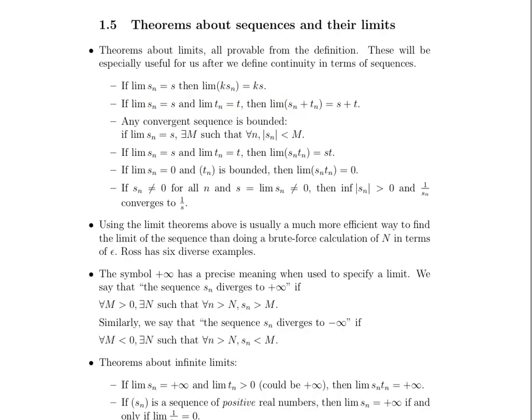Another theorem is that any convergent sequence is bounded. So if we have a convergent sequence sₙ which converges to s, there exists some number capital M such that for all little n, the absolute value of sₙ is less than M. You're not going to have an unbounded sequence that happens to be convergent — that does not work. That's probably something you've heard before.